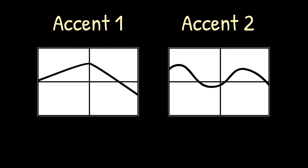Alright, let's recap the relevant parts from the other video. First of all, we have two accents, Accent 1 and Accent 2, shown here with their respective pitch contours. Accent 1 is basically just regular intonation, with a single increase in pitch on the stressed syllable, whereas Accent 2 has a double-peaked pitch, where it first peaks in the stressed syllable and then once again in the unstressed one.